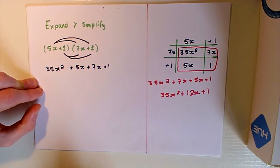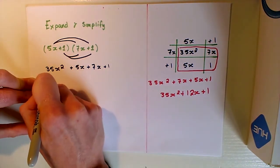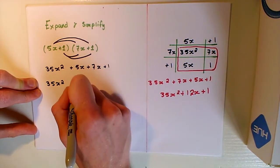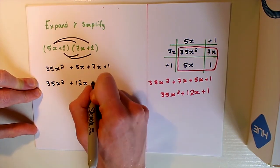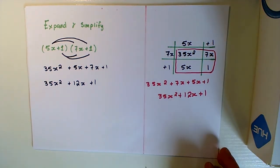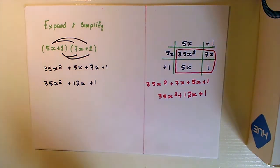Again, we can tidy this up a bit further. So our 35X squared remains as is, 5X plus 7X is 12X, and our 1 is just 1. So we can see our solutions on both sides here are the same. Both are perfectly valid methods of completing this problem, and it's just personal preference to decide which one you use. Some people will find one easier than the other.